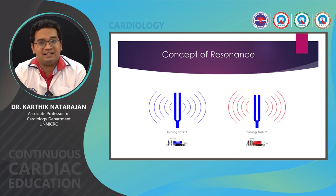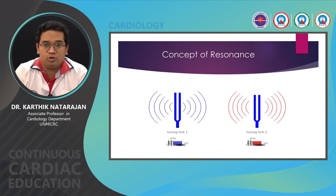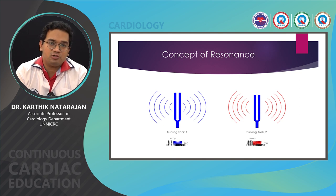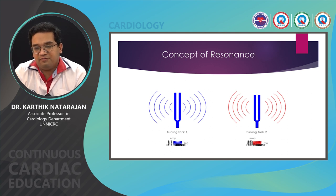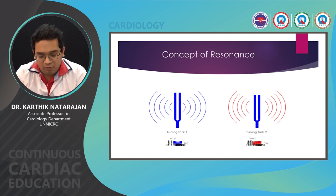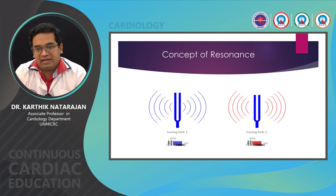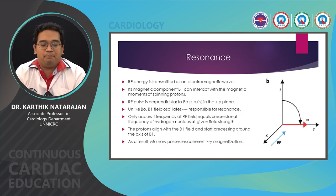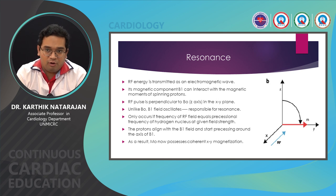To understand the importance of the Larmor frequency, we need to understand resonance — a universal concept in physics. Imagine a tuning fork: you activate one tuning fork and bring it close to another. The frequency of vibration of the first will be picked up by the second, causing it to vibrate at that same frequency. Similarly, for a proton in a magnetic field, that becomes the proton's Larmor frequency, and all protons oriented toward the magnetic field will oscillate at that same frequency.